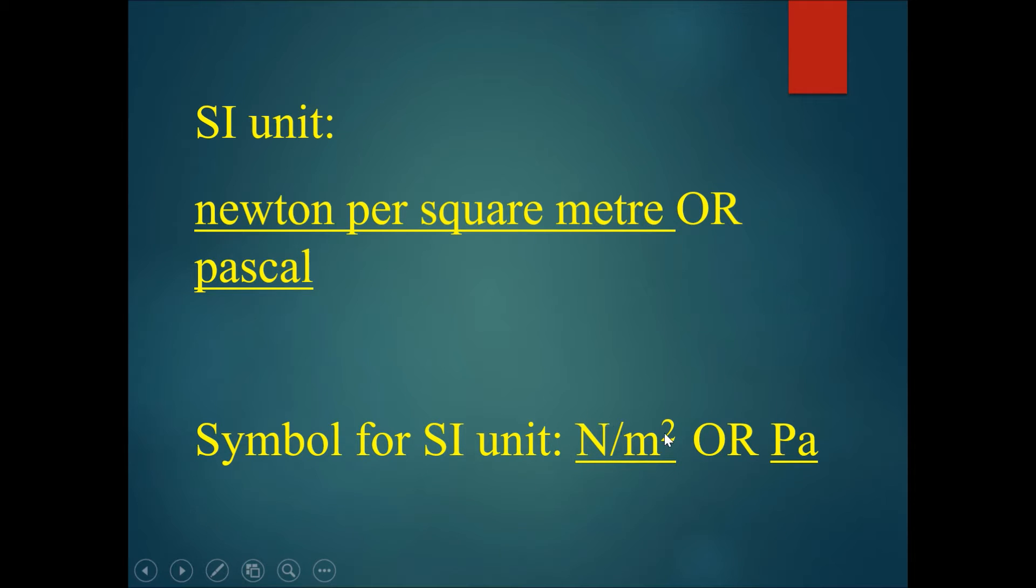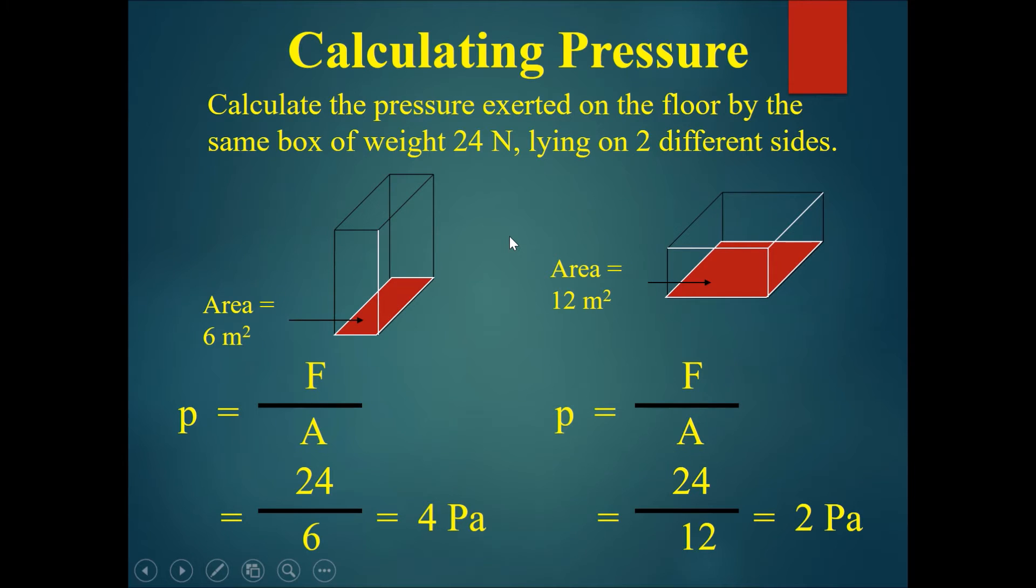In a very simple question, we ask you to calculate the pressure exerted on the floor by the same box of weight 24 newtons when it's lying on two different sides. Imagine these two are the same box, but this one is standing upright and this one is lying on its side.